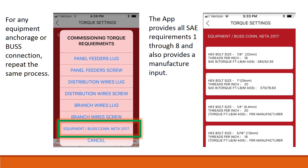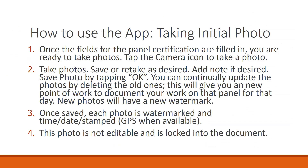Taking an initial photo. Once the fields for the panel certification are filled in, you are ready to take photos. Tap the camera icon to take a photo. Take photos and save or retake as desired. Add a note if desired, then save the photo by tapping OK. You can continually update the photos by deleting old ones. This gives you a new point-of-work to document your work on that panel for that day. New photos will have a new watermark. Once saved, each photo is watermarked and time-date-stamped with GPS when available. This photo is not editable and is locked into the document.